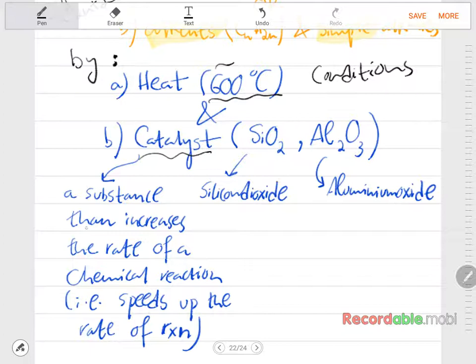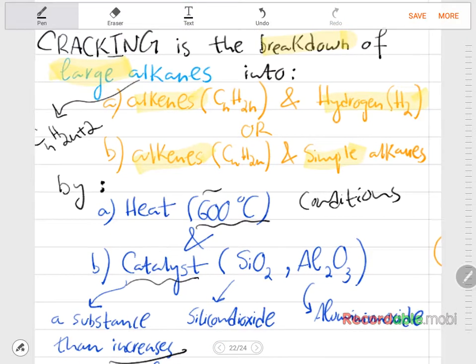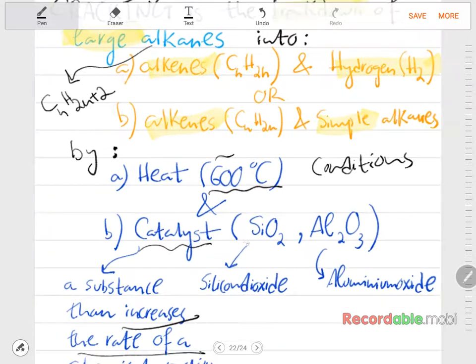And two catalysts. What is meant by catalyst? For those of you that don't know, a catalyst is basically a substance that increases the rate of a chemical reaction. In other words, it speeds up the rate of the reaction. The two catalysts that need to be present in order for the cracking to take place are silicon dioxide and aluminium oxide.